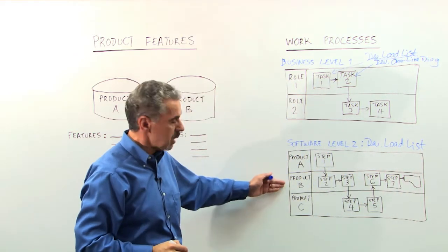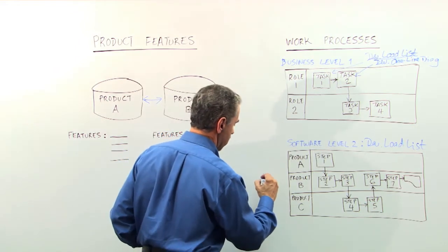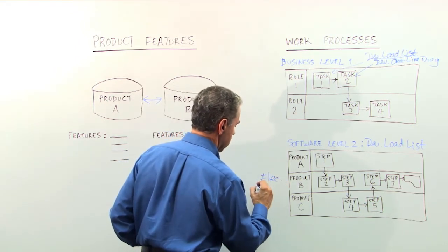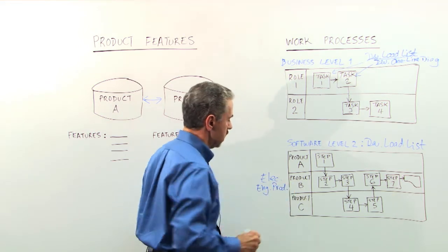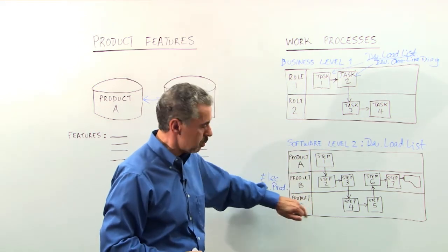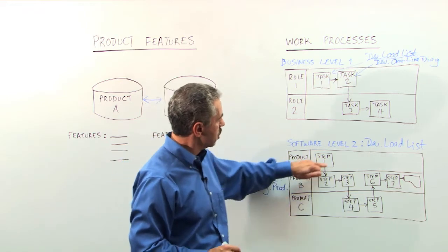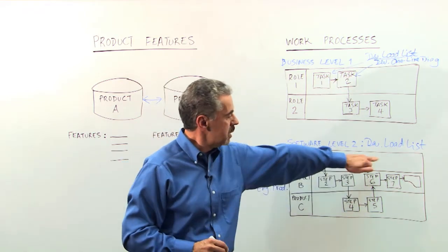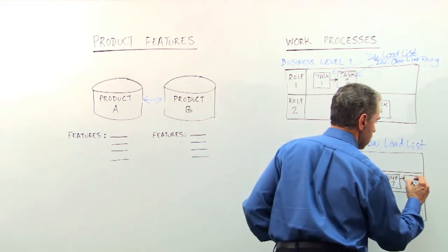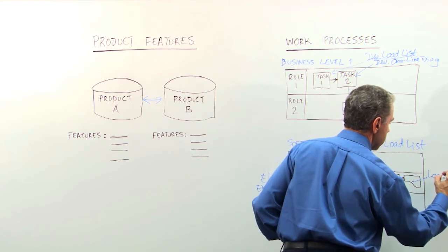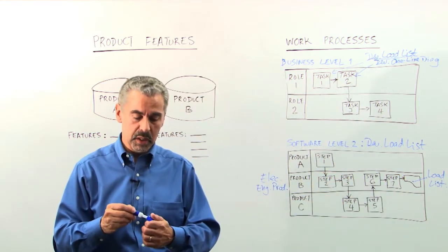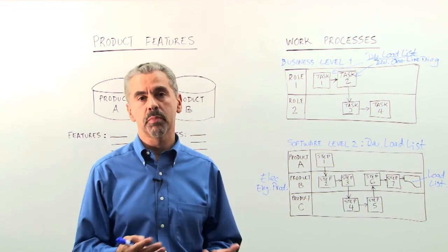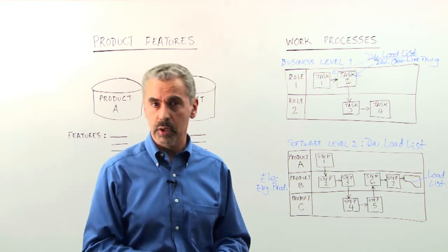And in our example, product B may be our major product. It may be an electrical engineering product. And it's going to cooperate with other products. And we're going to go through a series of steps. And at the end, we have our load list.